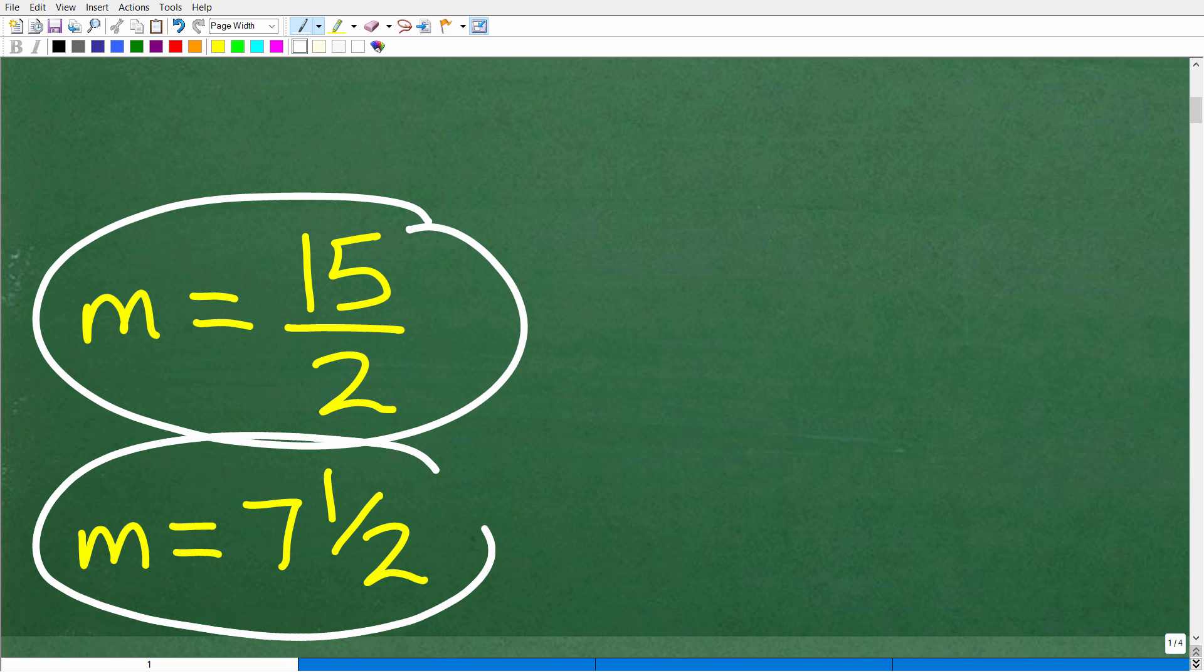Some of you may have converted this improper fraction into the mixed number fraction seven and one half. So both of these answers are correct. And I'm gonna tell you right now, this would be the preferred way to write your solution. I will explain why later.